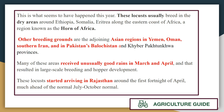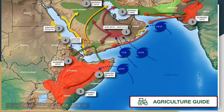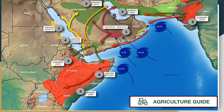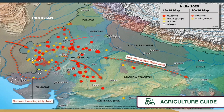Locusts usually arrive in Rajasthan from July to October. We can see the parts of Rajasthan being affected by the locusts, and now they are traveling towards the northern parts of the country like Madhya Pradesh, Uttar Pradesh, and then Bihar. The route goes from Yemen-Oman-Iran-Pakistan, then into India and Rajasthan.